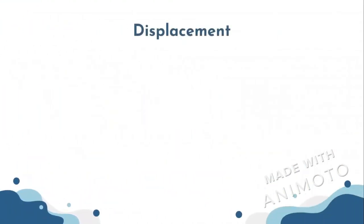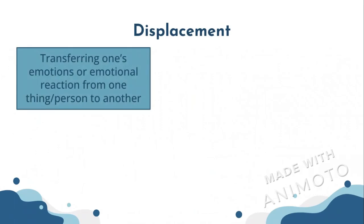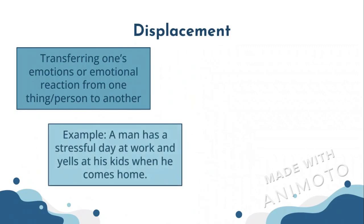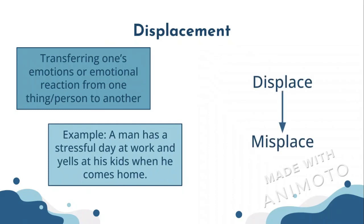The last defense mechanism we are learning about is displacement. Displacement is transferring one's emotions or emotional reaction from one thing or person to another. An example of displacement is a man who has a stressful day at work and comes home and yells at his kids to take his emotions out on them. To remember displacement, just keep in mind that 'displace' sounds like 'misplace' — misplacing something means putting your emotions in the wrong place.